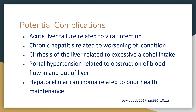Potential complications of acute hepatitis include acute liver failure related to viral infection, chronic hepatitis related to worsening condition, cirrhosis related to excessive alcohol intake, portal hypertension related to obstruction of blood flow, and hepatocellular carcinoma related to poor health maintenance. Signs and symptoms to watch for include yellowing of skin and eyes, increased abdominal pain, disorientation, confusion, fatigue, weight loss, edema, nausea, and vomiting. Ways to prevent further complications include avoiding risky behavior, getting vaccinated, following medication instructions, avoiding alcohol, maintaining a healthy weight and diet, knowing the health status of sexual partners, avoiding IV drugs, and avoiding blood and bodily fluids of others.